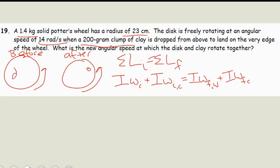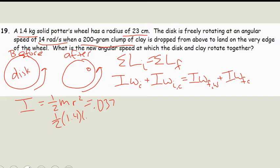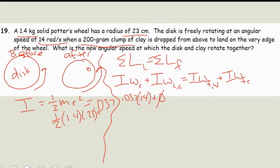We're looking at our disc, so the moment of inertia of our disc is one-half m·r². That's going to be equal to one-half times our mass 1.4 times 0.23 squared, and that gives me 0.037. So putting that into our equation, we have 0.037 times 14 radians per second, plus zero — because the clay has no rotational velocity initially.